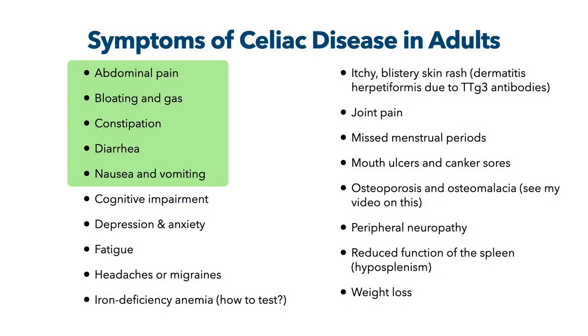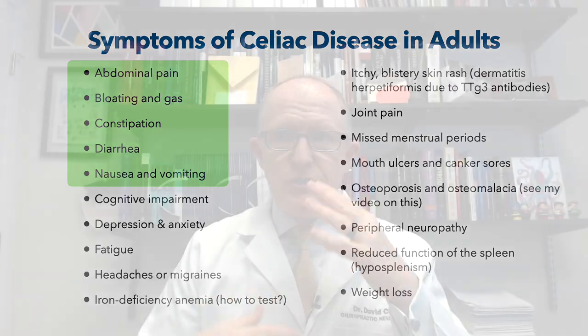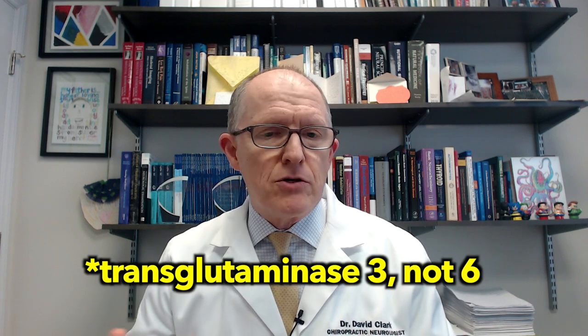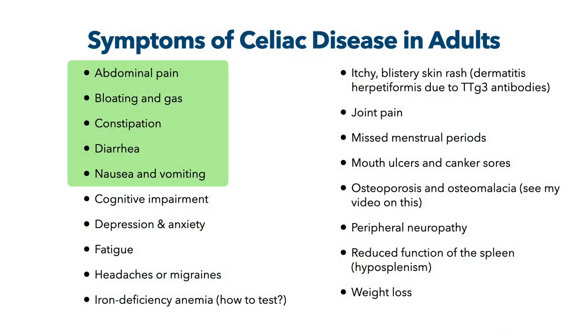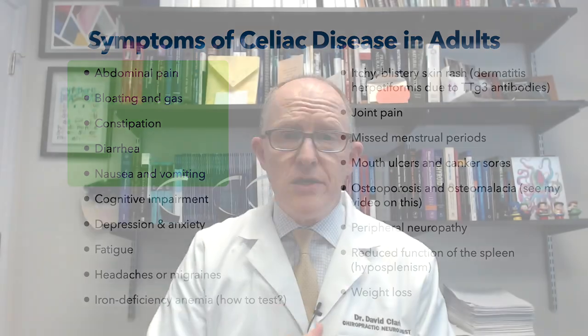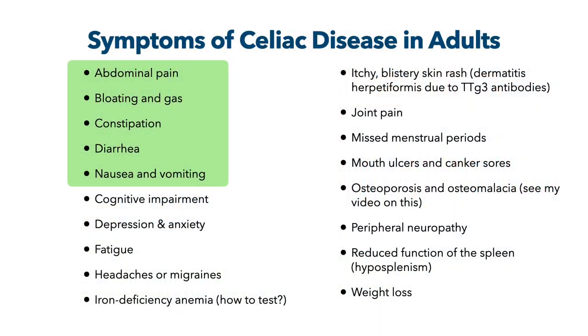Adult symptoms also include depression and anxiety, fatigue, headaches and migraines, iron deficiency anemia, dermatitis herpetiformis — which is due to transglutaminase 6 cross-reactivity — joint pain, missed periods as an endocrine problem, mouth ulcers and canker sores, nausea and vomiting, osteoporosis and osteomalacia — from either malabsorption of calcium or cross-reaction with osteocytes — peripheral neuropathy, reduced function of the spleen, and weight loss.